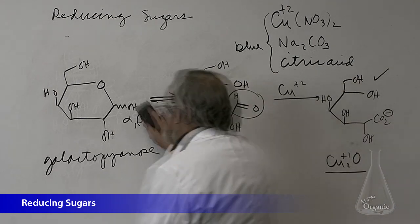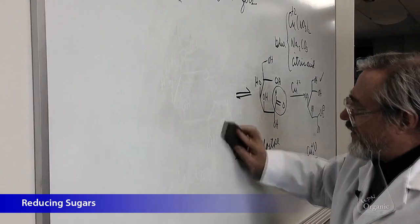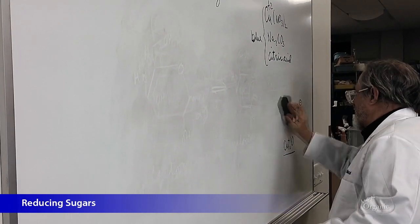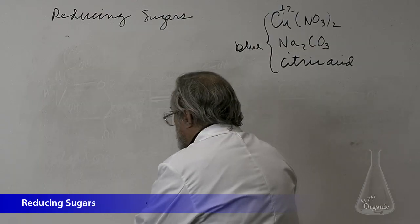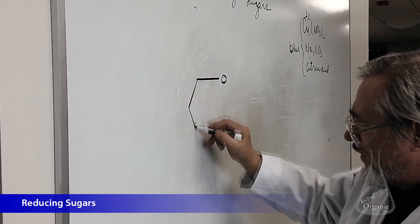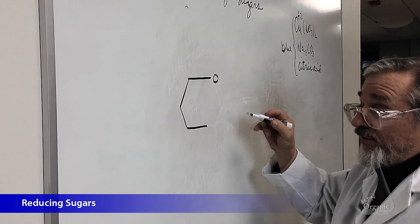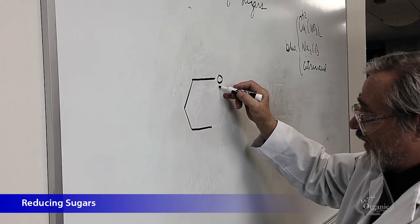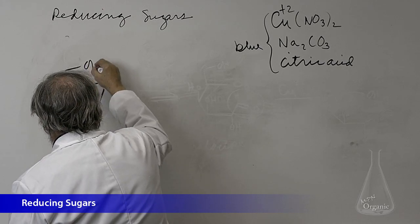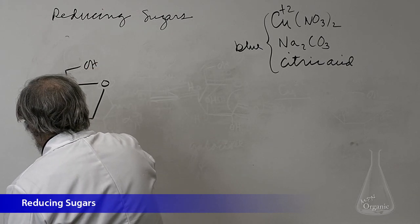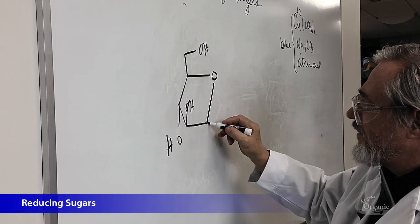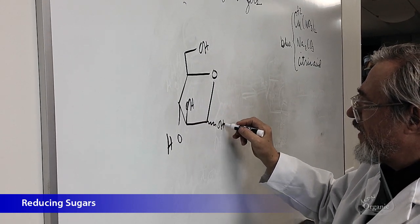Now, what about fructose? Fructose is a little bit different. Here we have fructose in terms of... Now, the best way to draw fructose in the furanose ring system is to draw glucose and kind of truncate it so it looks like glucose, but not quite.